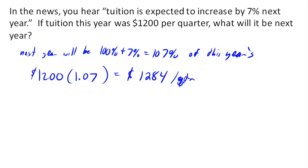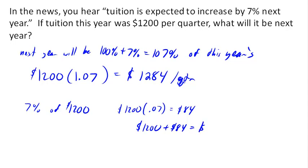Now another way we could have done this would be to say that 7% of $1,200, in other words, we could have started by just figuring out what the increase was going to be. So we could have said $1,200 times 7% is $84. In other words, the tuition is going to increase by $84, and then the tuition this year plus the increase gives us the expected tuition for next year. And that'd be another way to approach the same problem.